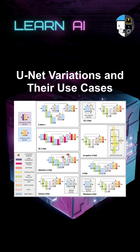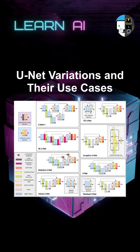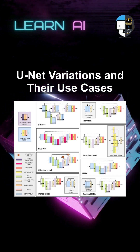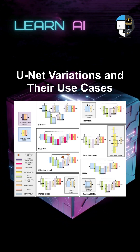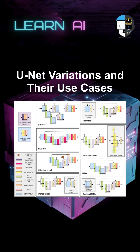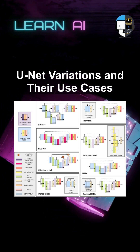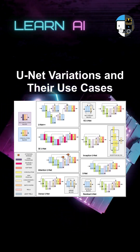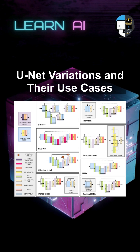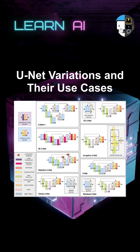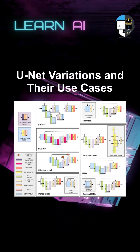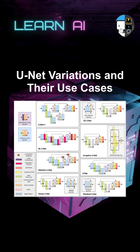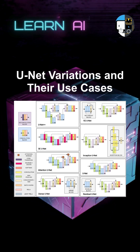Since its inception, several variations of U-Net have been developed to address specific challenges and enhance its performance in various tasks. U-Net++ introduces nested and dense skip connections, improving feature refinement and segmentation accuracy. Res U-Net incorporates residual connections, enabling the construction of deeper networks while mitigating vanishing gradient issues.